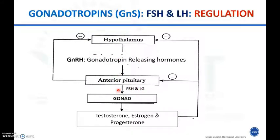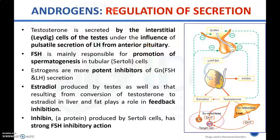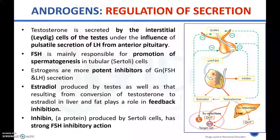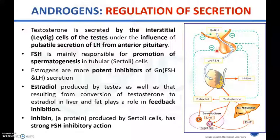Specifically for androgen regulation, testosterone is secreted by the Leydig cells of the testes under the influence of LH and FSH from the anterior pituitary. FSH is mainly responsible for spermatogenesis in males. Estradiol, formed by conversion of testosterone by an enzyme, is responsible for negative inhibition of FSH and LH release at the anterior pituitary and hypothalamus. Inhibin, produced from Sertoli cells, also has strong negative FSH inhibitory action.